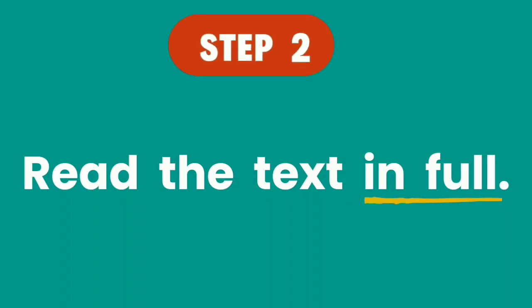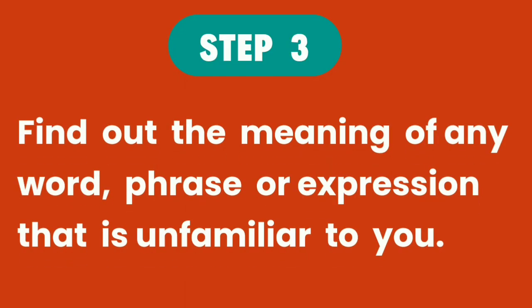Step 2: Read the text in full. We're reading everything in the text from top to bottom. That way we can get a general understanding of what the text is about before attempting to write the summary.